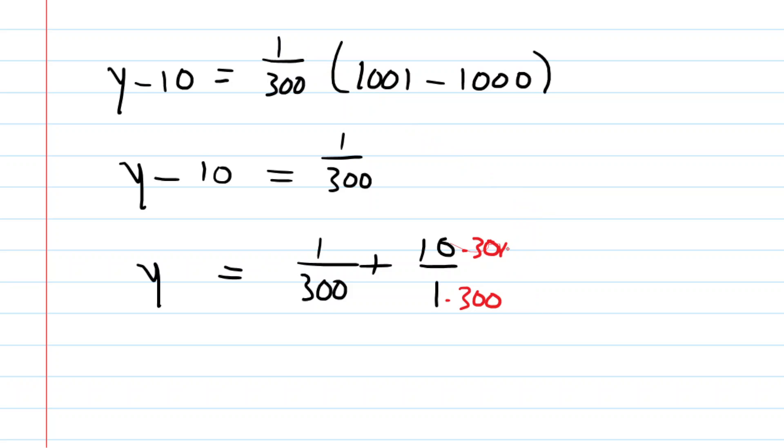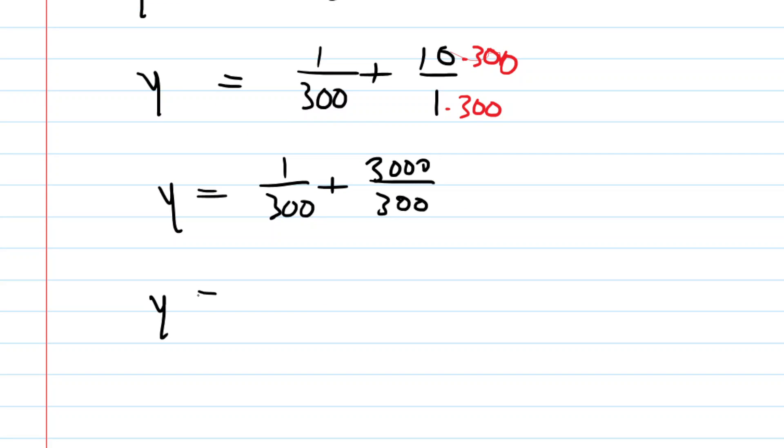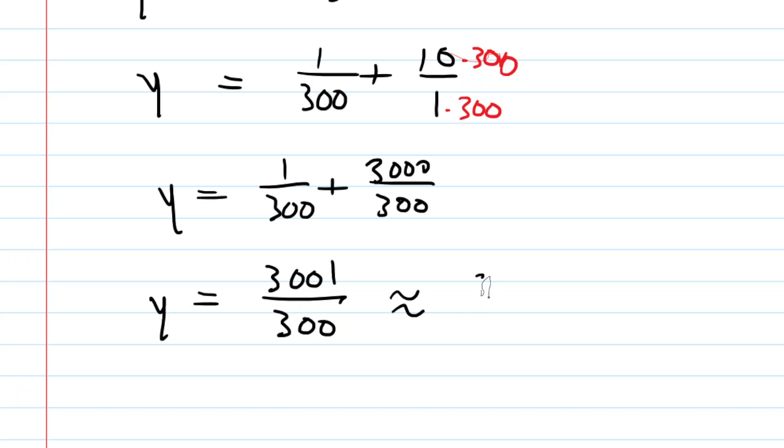So now we have y equals 1 over 300 plus 3,000 over 300. And then we add the numerators and we get 3,001 over 300. That will serve as an approximation to the cube root of 1,001.